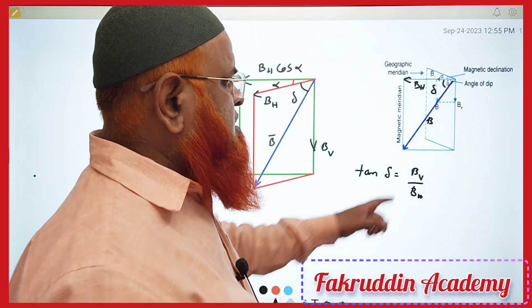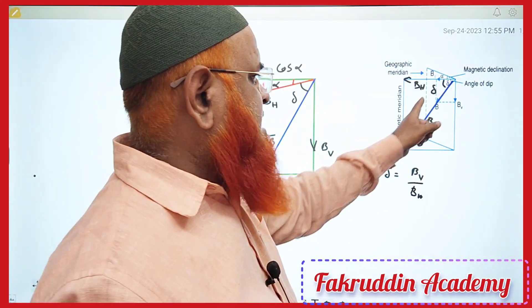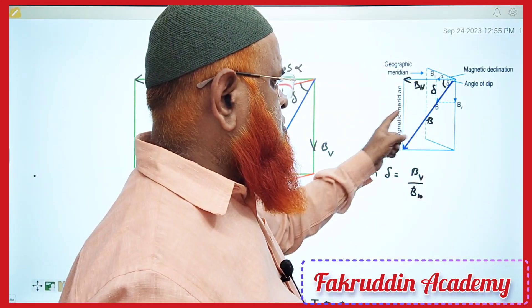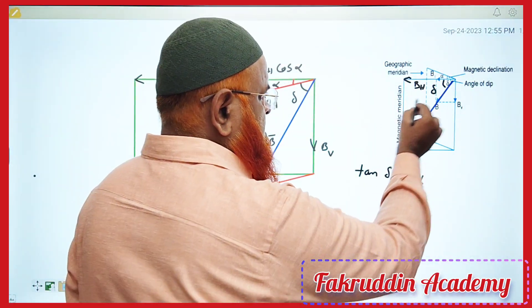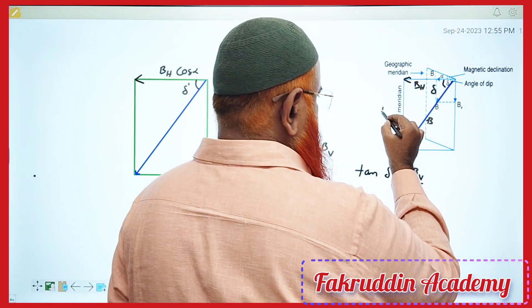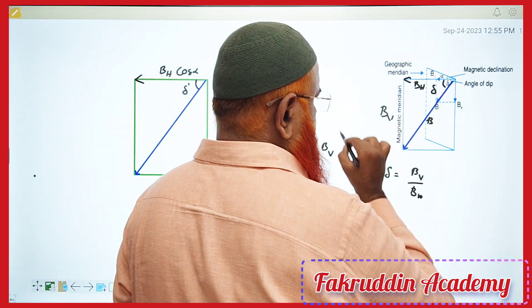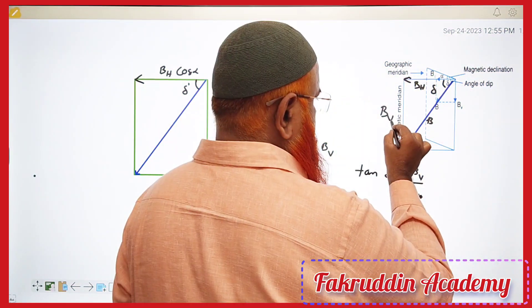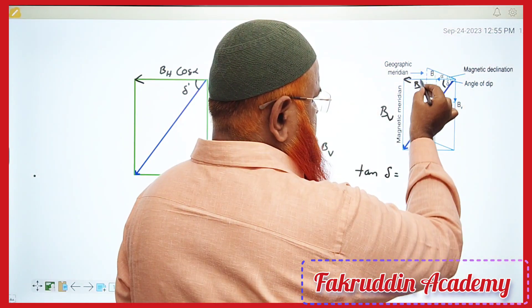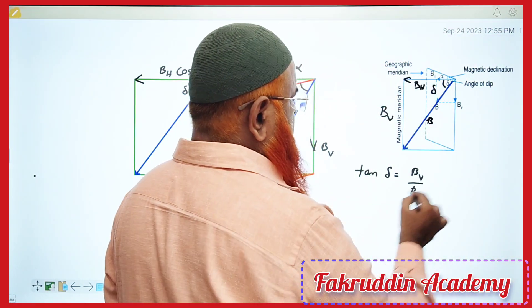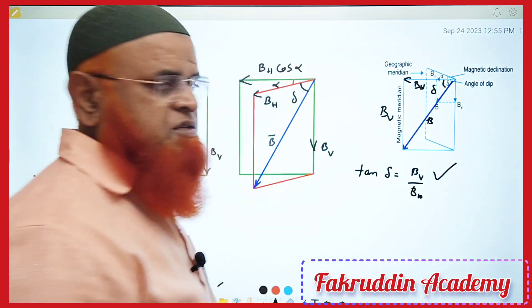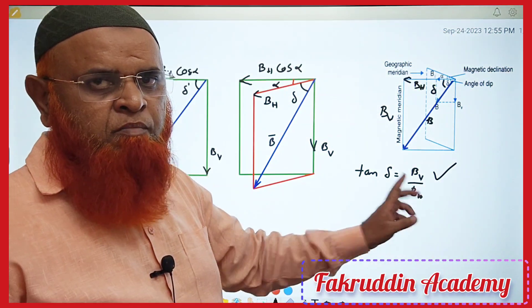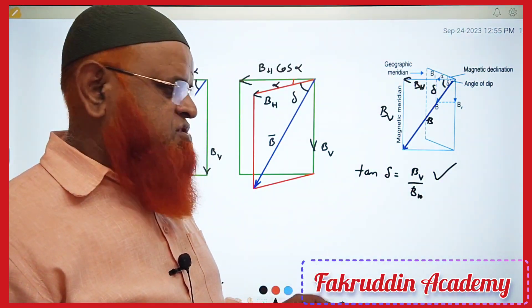You all know that tan delta is equal to BV — that is the opposite side — divided by BH, the adjacent side. So we get tan delta = BV / BH.